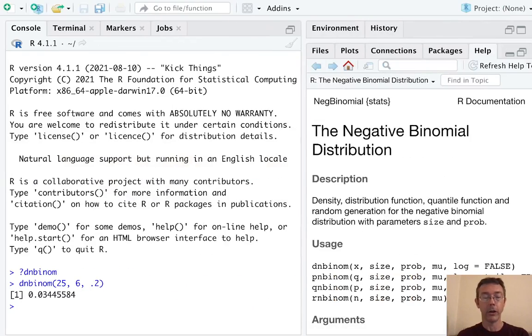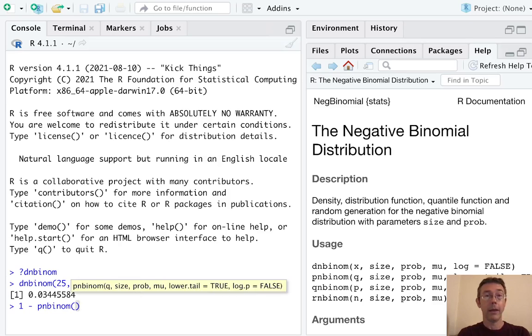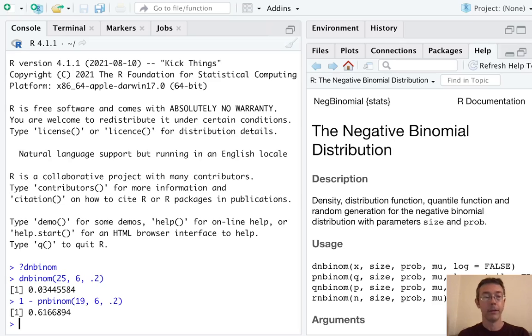So back to R, let's do one minus the pnbinom in question. And again, we want less than or equal to 19 in order to do less than 20. Our parameters are still going to be the same, we want six successes and a 0.2 probability of success in each trial. So just under 62% in this case.